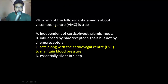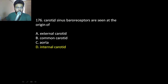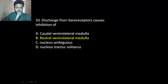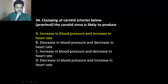Regarding MCQ review: the vasomotor center acts along with the cardio vagal center. Carotid sinus baroreceptors are located at the origin of the internal carotid artery — that is, at the bifurcation where the internal carotid artery limb has the baroreceptors. The discharge from baroreceptors causes inhibition of the rostral ventrolateral medulla or cardio accelerator center. Clamping of the carotid artery increases blood pressure.